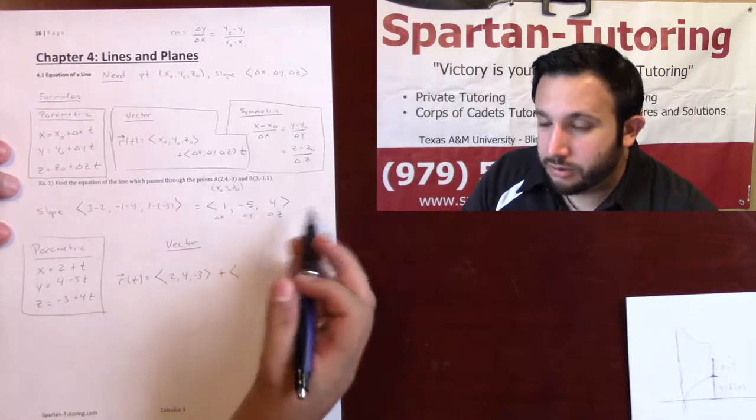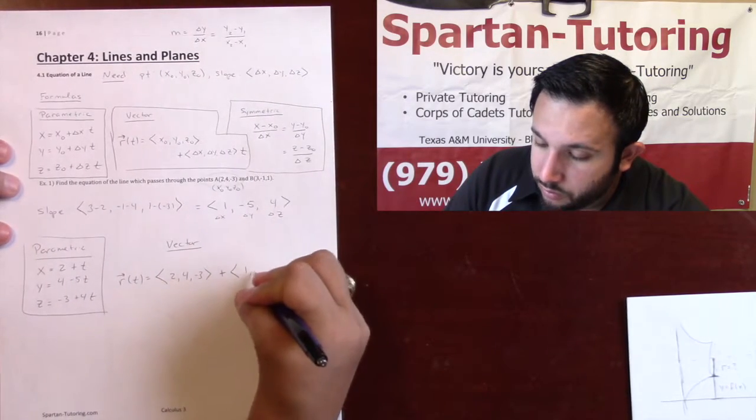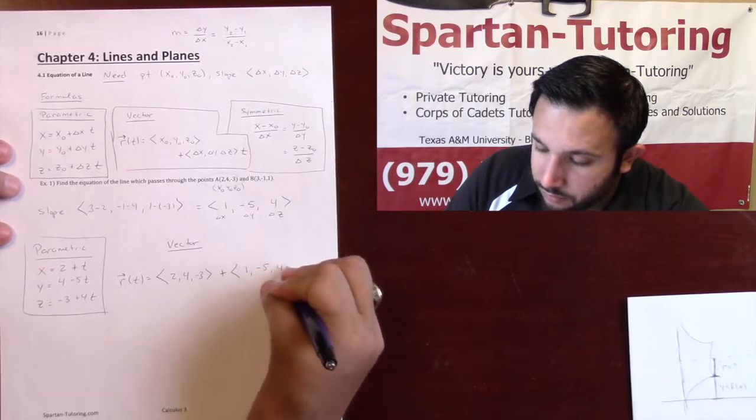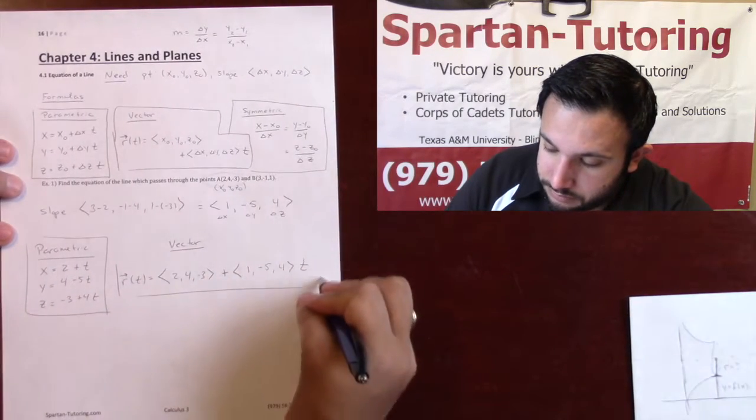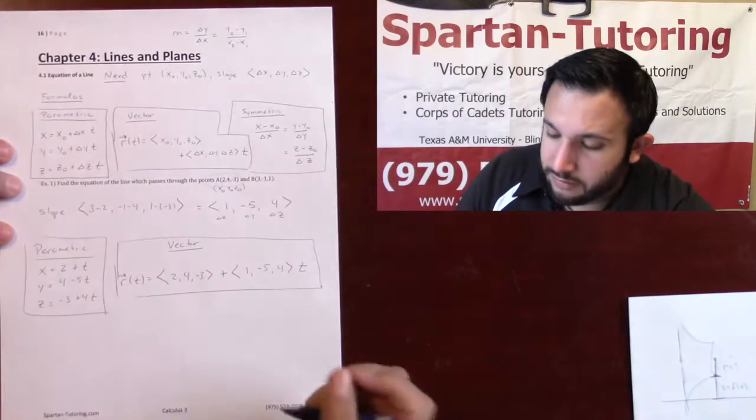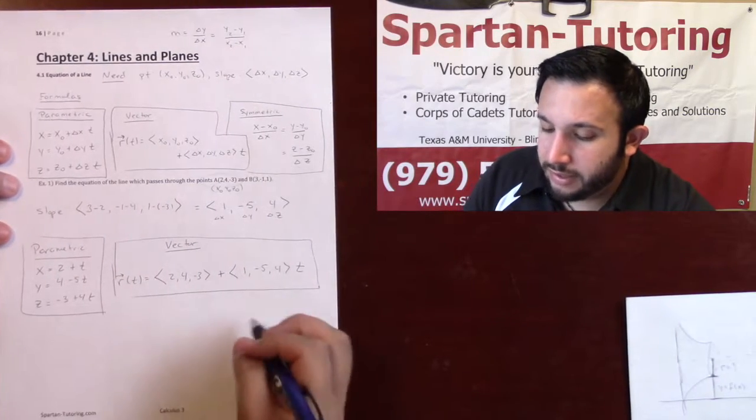then you write your delta x, delta y, delta z, this will be 1, negative 5, 4, and you multiply this by t. So, that's how they want it as a vector, that's how you'd write that out.